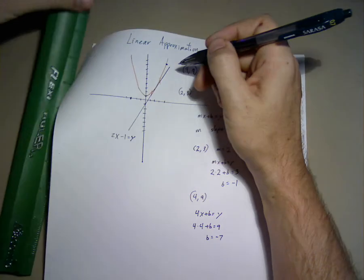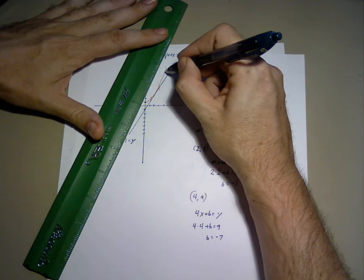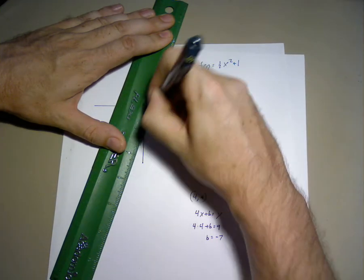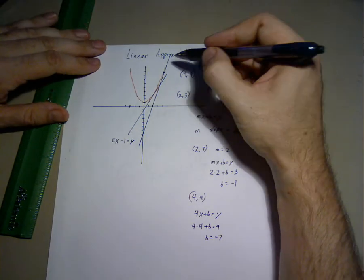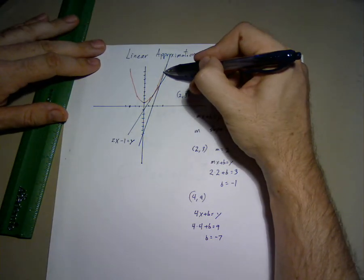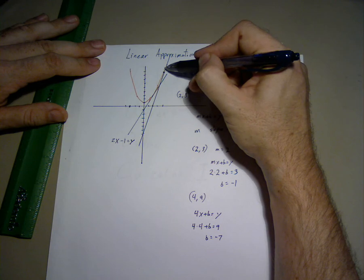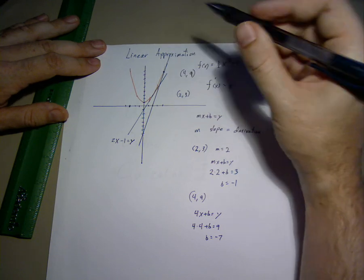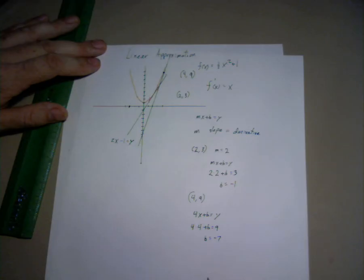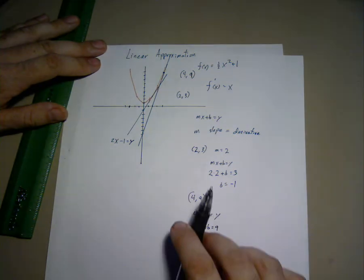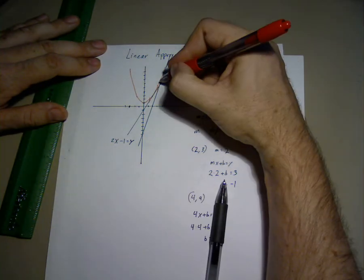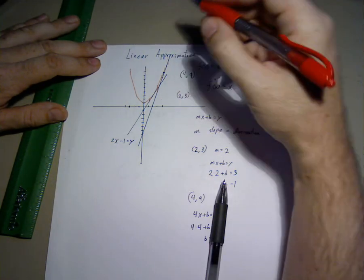In which case, our line is right there. The tangent line just barely touches the graph at that single point, and it gives us a decent approximation over a limited range.